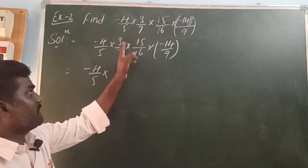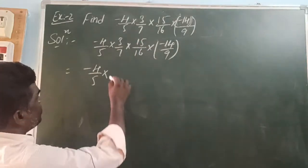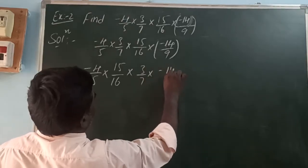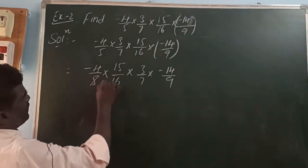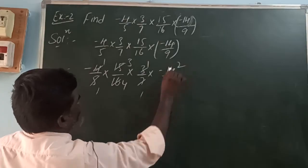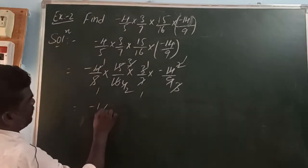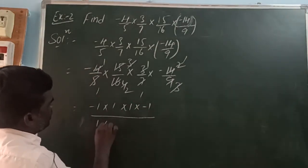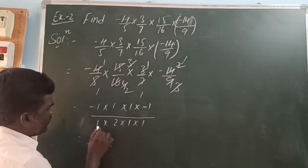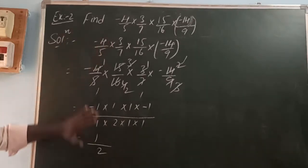Here, 3/7 into 15/16 — using commutative property, A×B = B×A — we can write 3/7 × 15/16 as 15/16 × 3/7. Rearranging and cancelling: 5÷5=1, 4÷4=1, 3÷3=1 (cancel), 7÷7=1 (cancel), and 2 remains. So minus × minus = plus, and the result is 1 × 1 × 1 × 1 / (1 × 2 × 1 × 1) = 1/2. The value of this problem is 1/2.